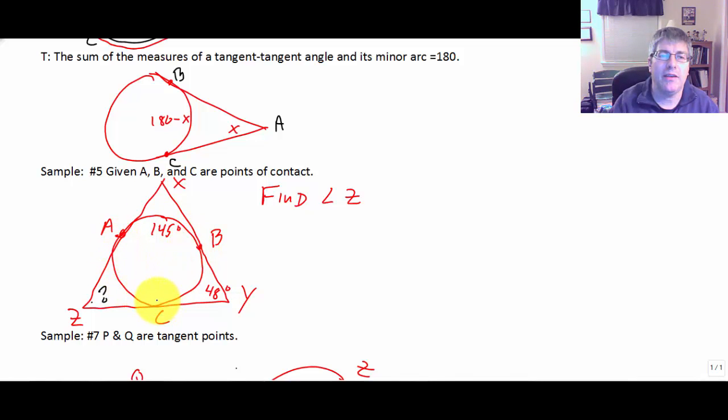Well, if I knew arc AC, then I'd know angle Z was the supplement. So angle Z we know is supplementary to arc AC. Well, angle Y is 48. So then we know that arc CB is 180 minus 48 or 132.